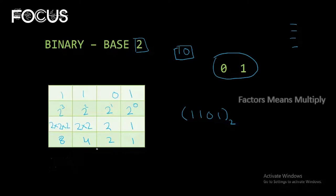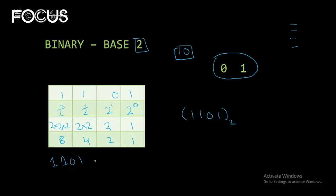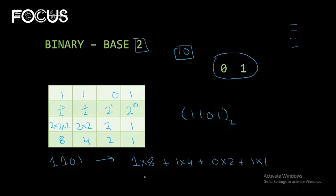By counting with the positional factors, we can also break down binary numbers just like decimal. We can write 1101 as: 1 multiplied by 8, plus 1 multiplied by 4, plus 0 multiplied by 2, plus 1 multiplied by 1. This equals 8 plus 4 plus 0 plus 1, which is equal to 13.